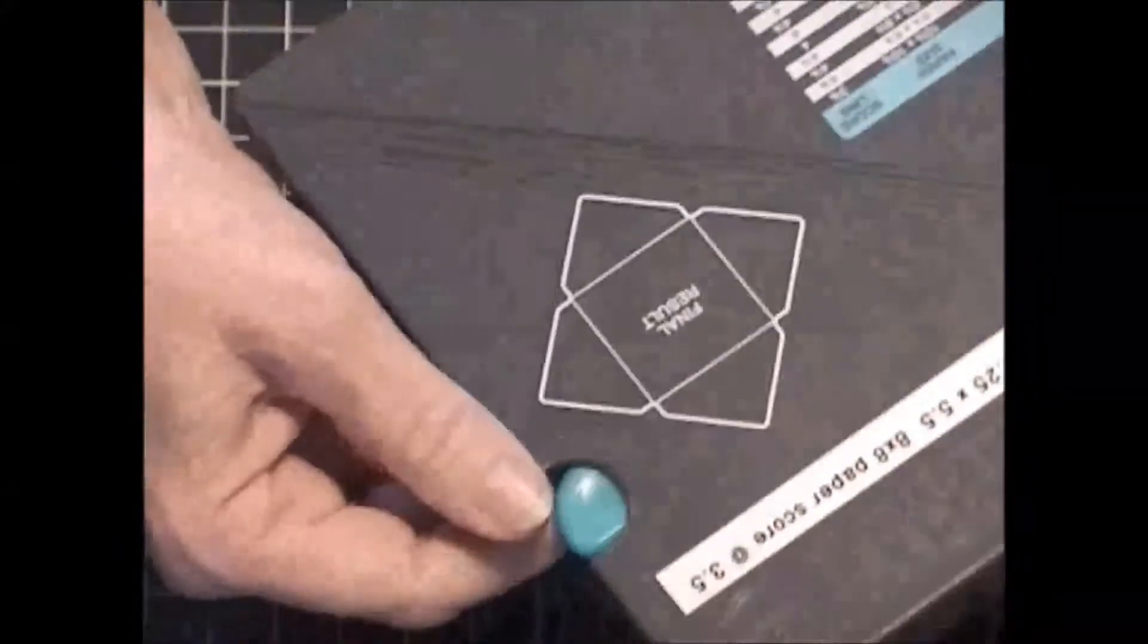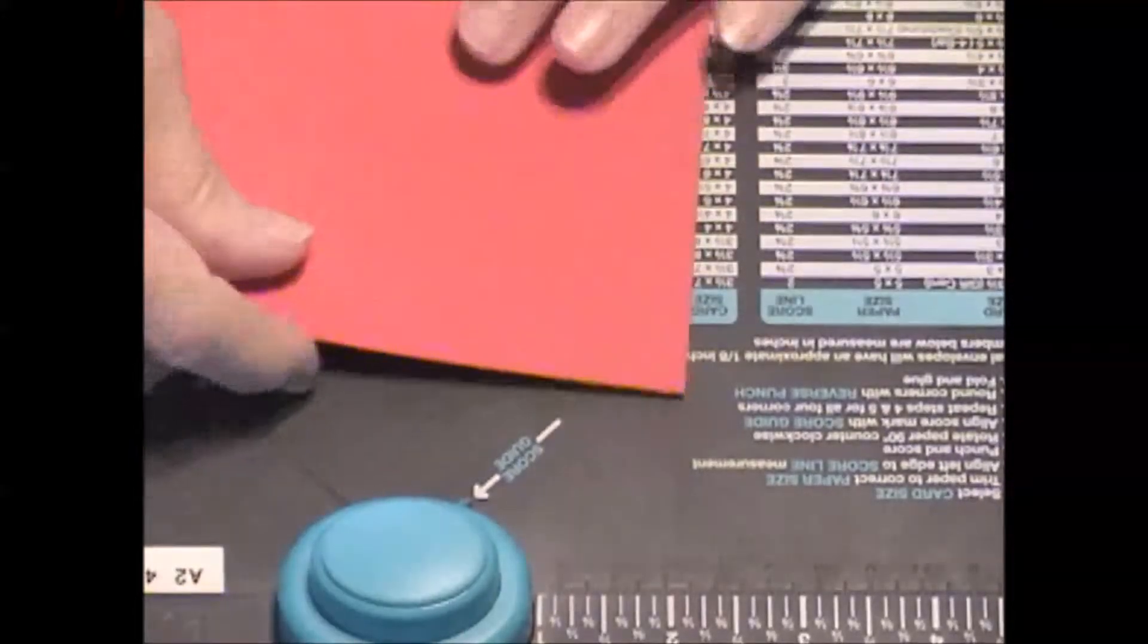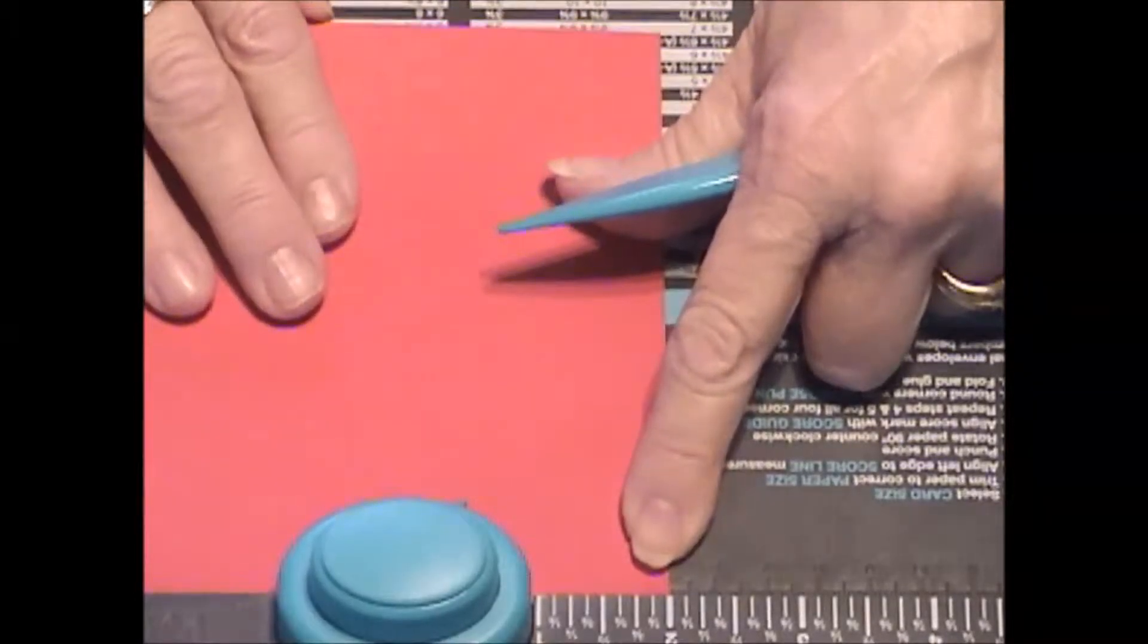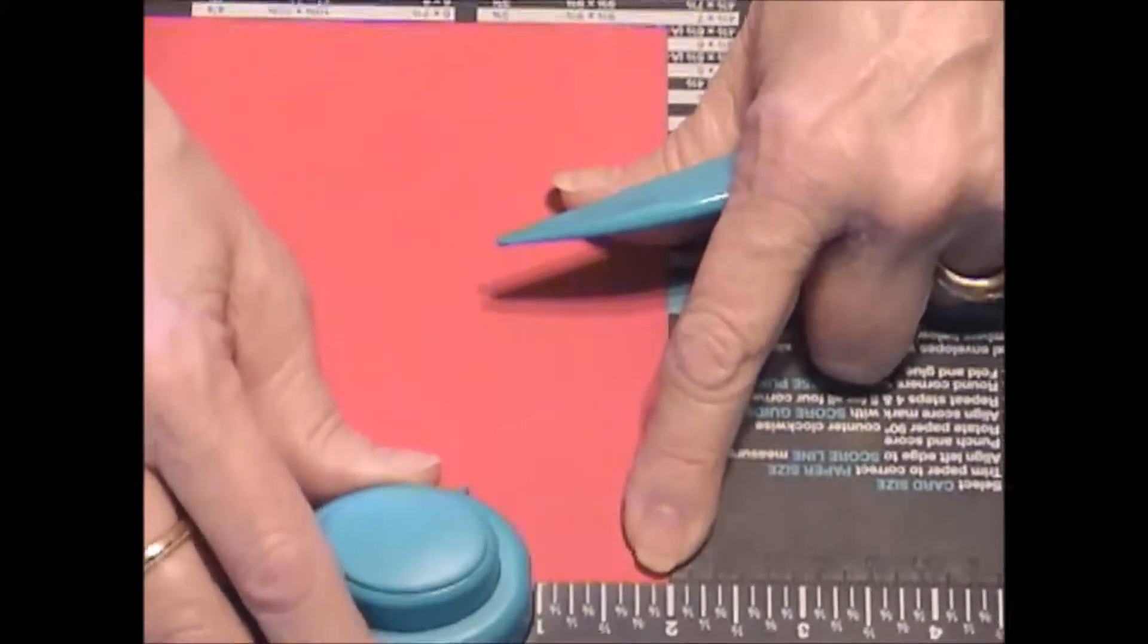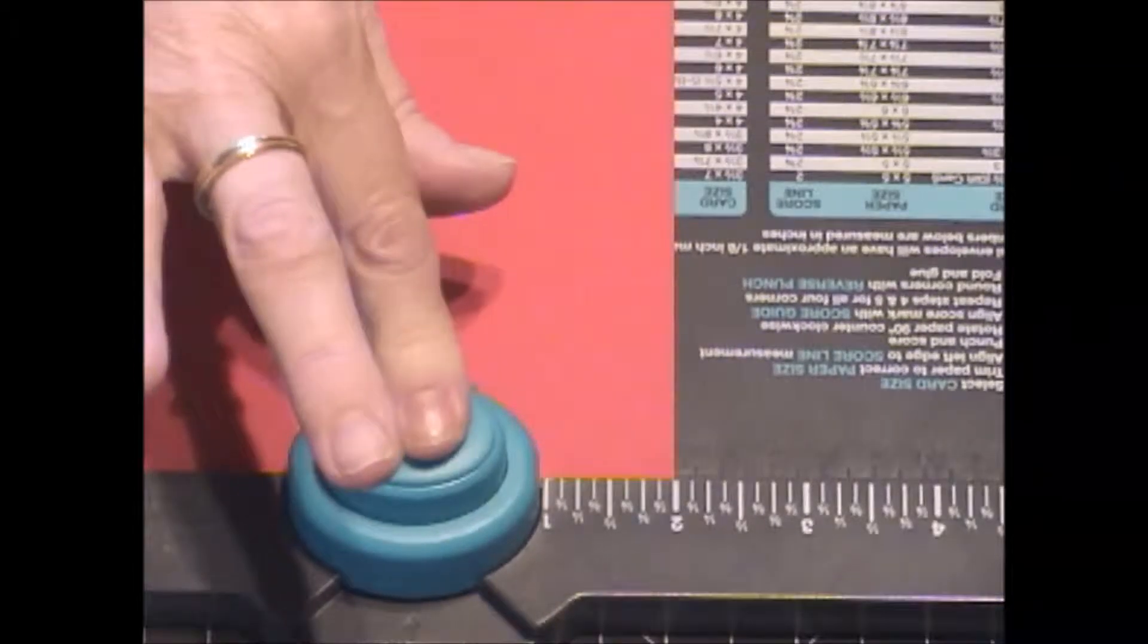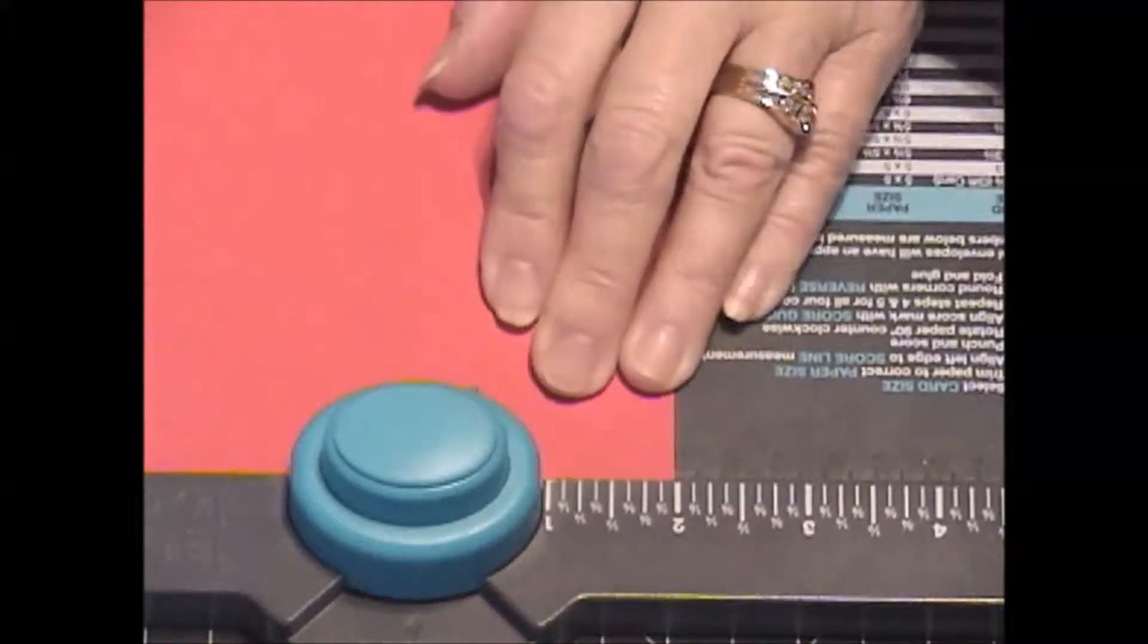Then we'll take on our handy scoring tool that comes included in the punch board, which is very nice. It says we're going to score our first score lines at two, so we're going to line our paper up at the two inch mark there, and we're going to punch this and then we're going to score.